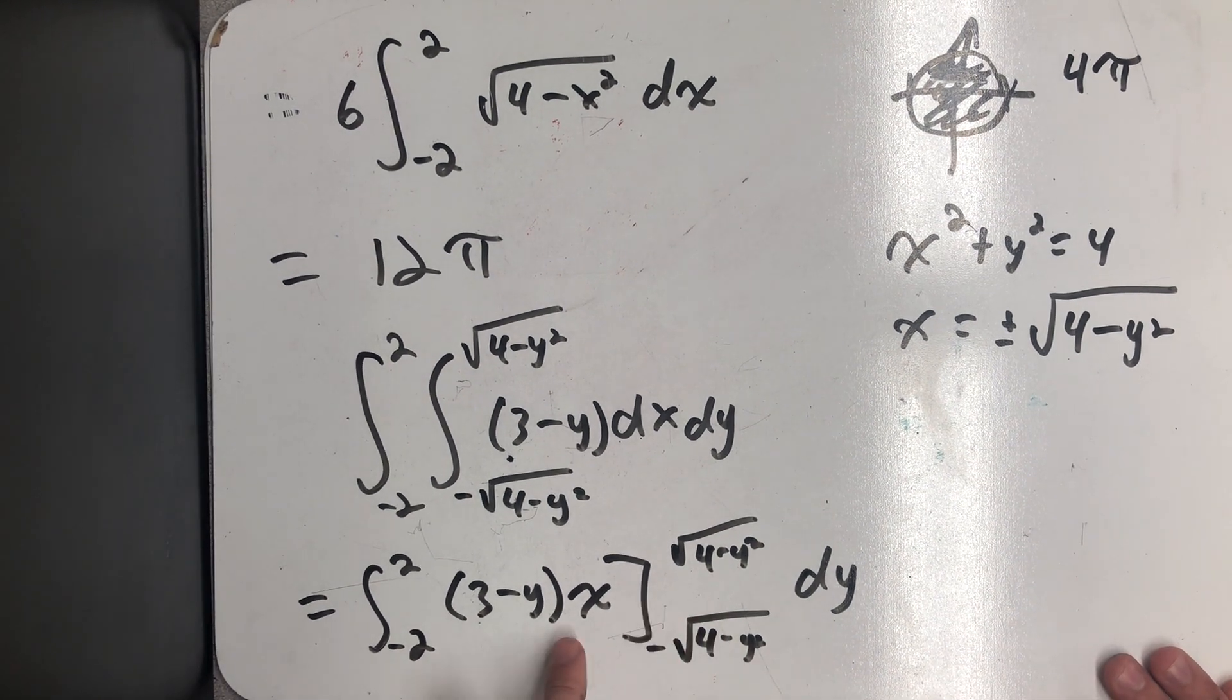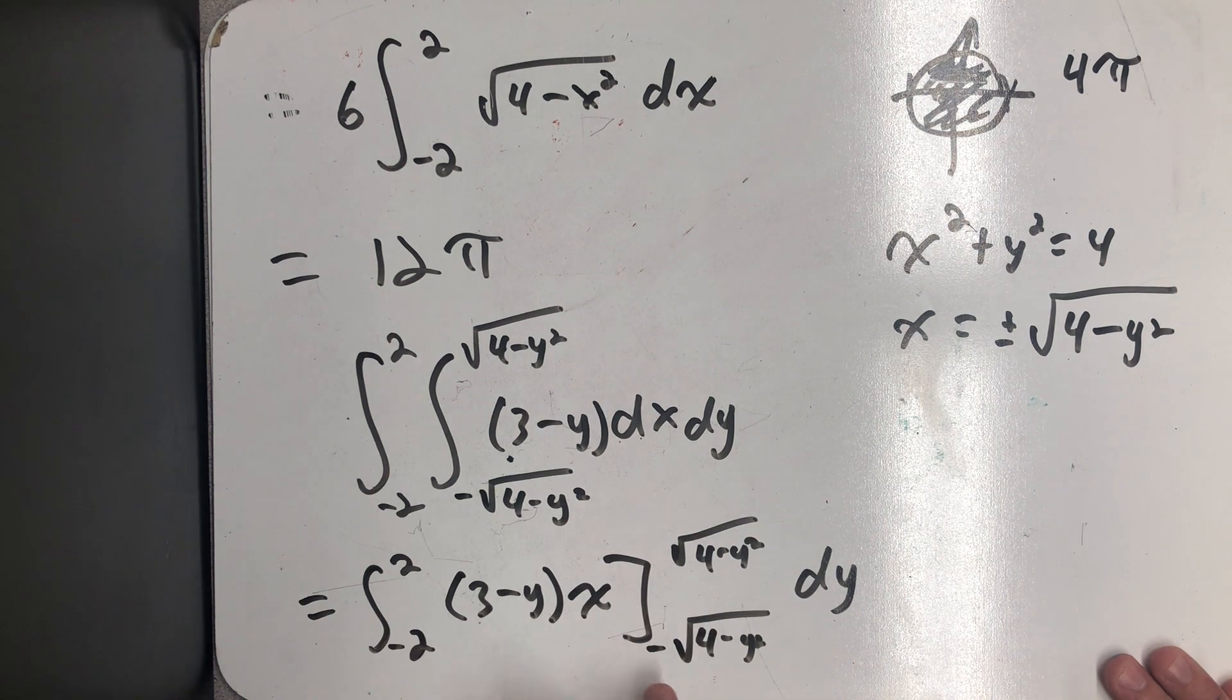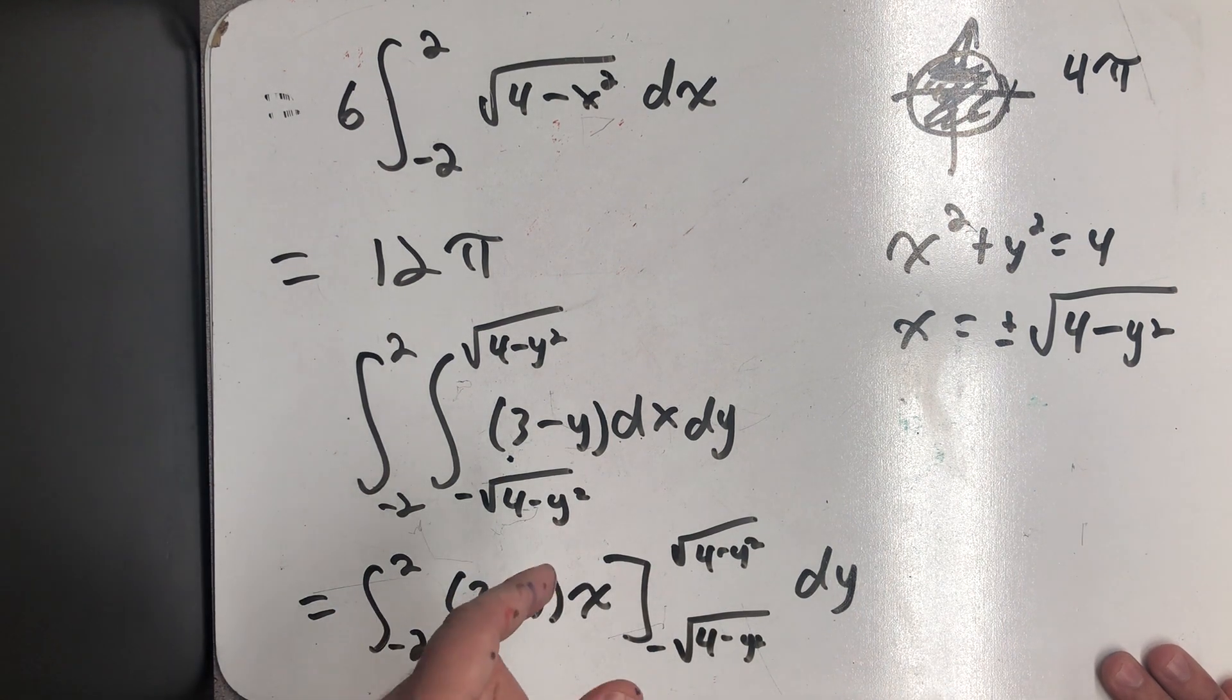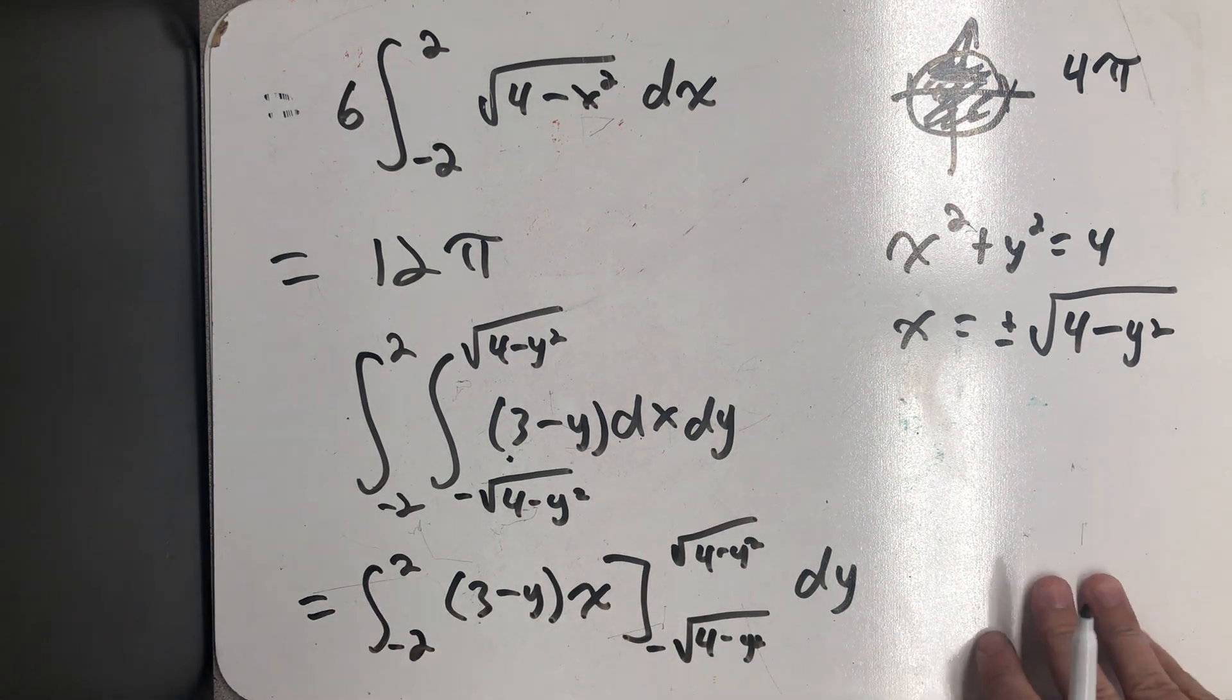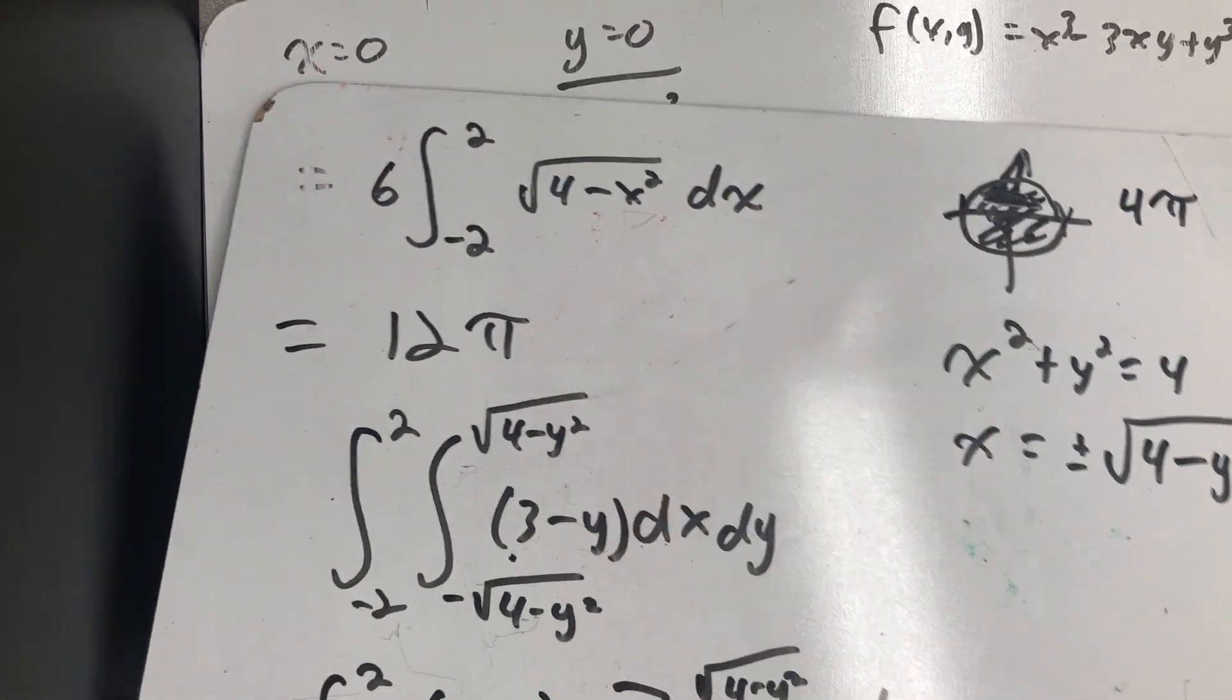Well, if I plug this in, I'll get 3 minus y times this thing. If I plug this in, I get minus that. Well, there's going to be a minus from the Fundamental Theorem of Calculus part 2. So I'll end up with just two of those things. So I'll end up with this integral.